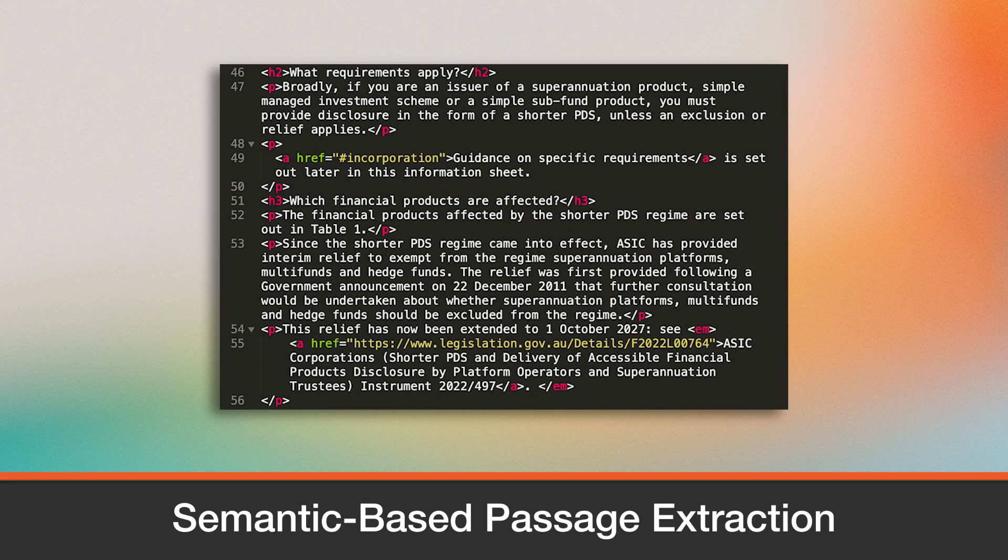Data Cloud supports three chunking strategies and automatically selects the best one based on the content type. Semantic-based passage extraction uses HTML structure, like heading and paragraph tags, to identify logical topic boundaries. It ensures coherence by grouping related content under each heading, and if a heading lacks content, it's merged with the next logical chunk.